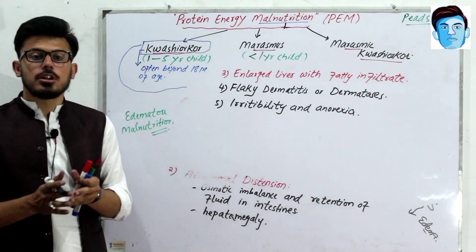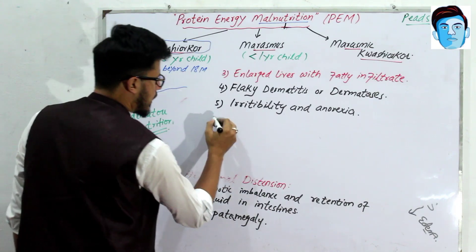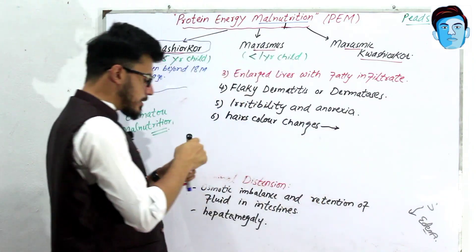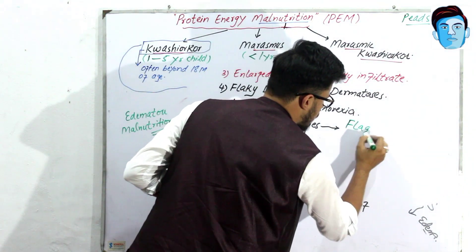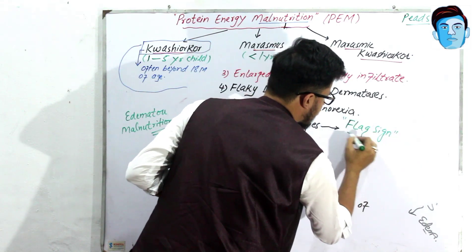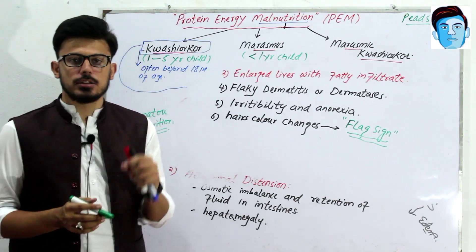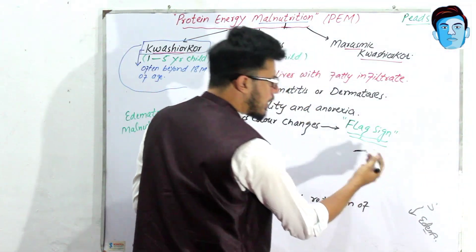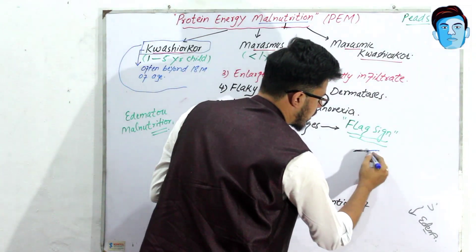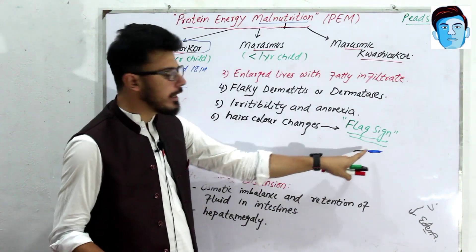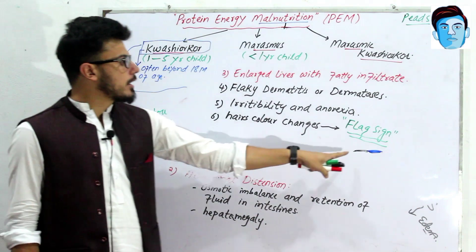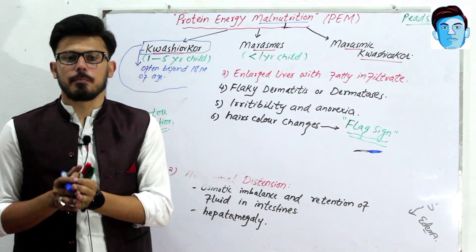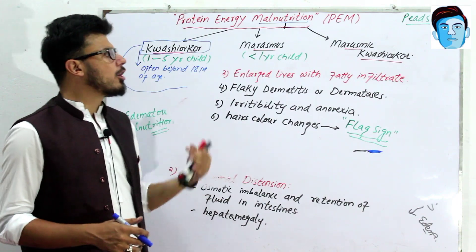There is also anorexia, and certain hair color changes are observed in kwashiorkor. A specific sign is called the flag sign — it refers to alternate hyper-pigmented and hypo-pigmented bands in the hair, appearing as alternate light and dark bands. This flag sign occurs in kwashiorkor.